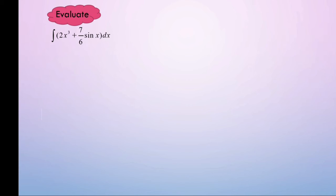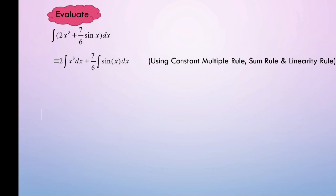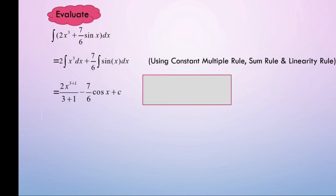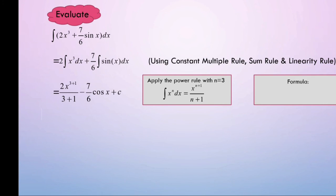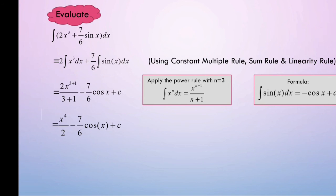Now let's proceed to the question on how to integrate. The question is: integrate 2x cubed plus 7/6 sin x dx. For the first step, we use the properties of indefinite integrals — the constant multiple rule, sum rule, and linearity rule — putting 2 outside the integral of x cubed and 7/6 outside the integral of sin x. Next, to integrate x cubed we apply the power rule with n equal to 3, and integrating sin x gives negative cos x. After calculating, we get x to the power of 4 over 2 minus 7/6 cos x plus C.